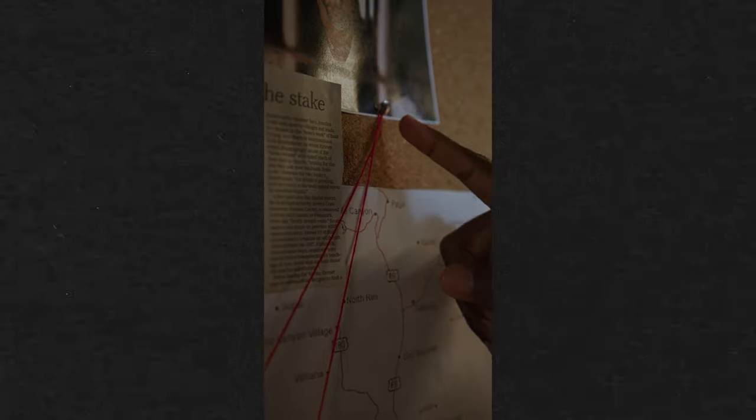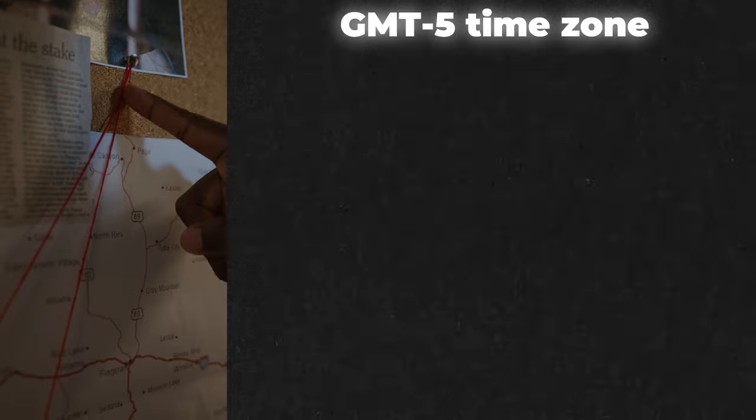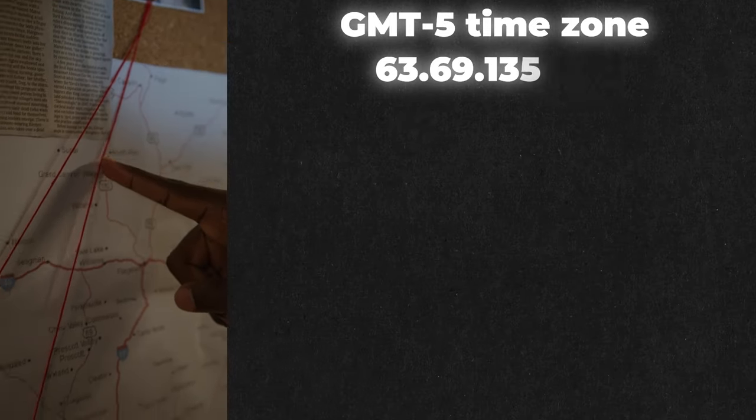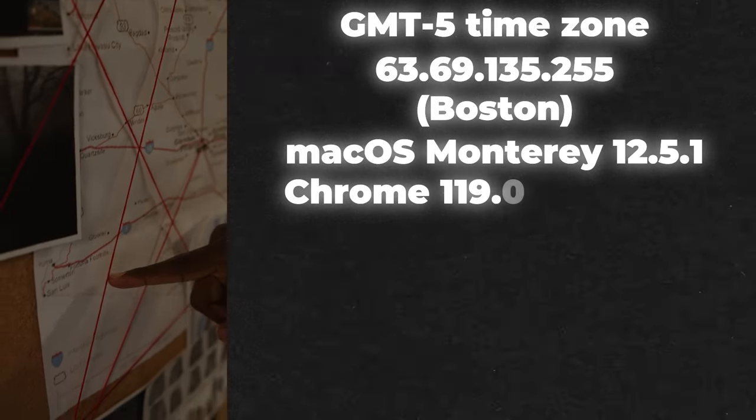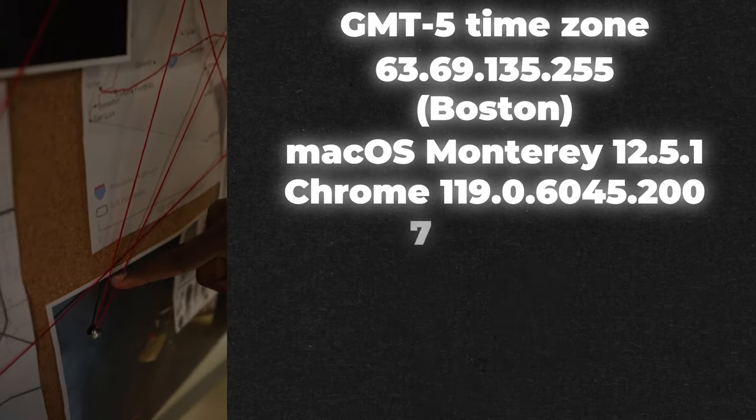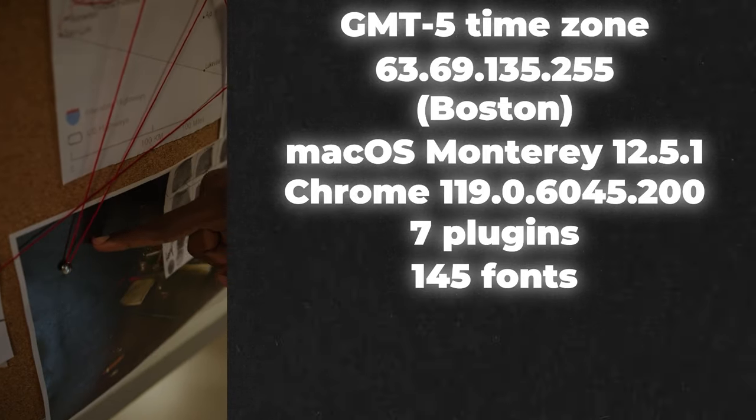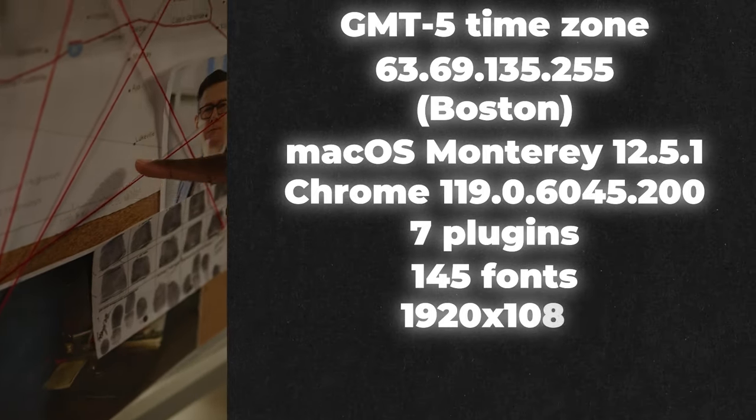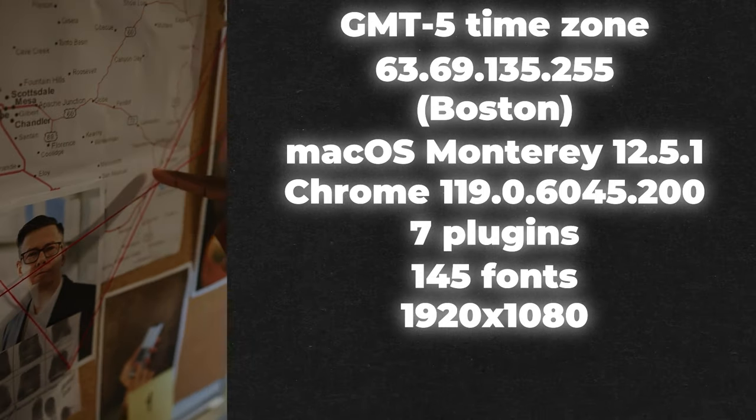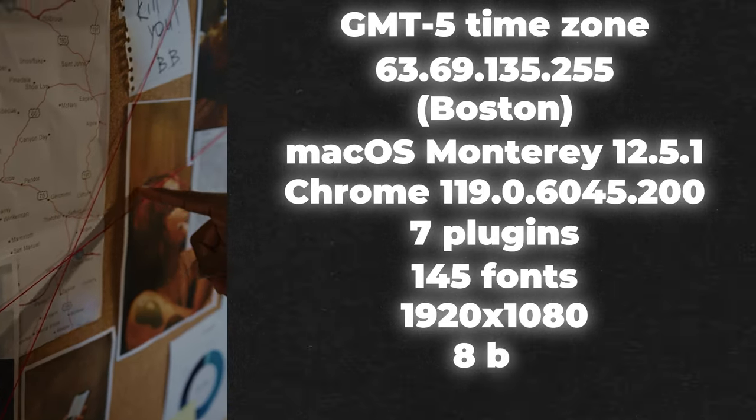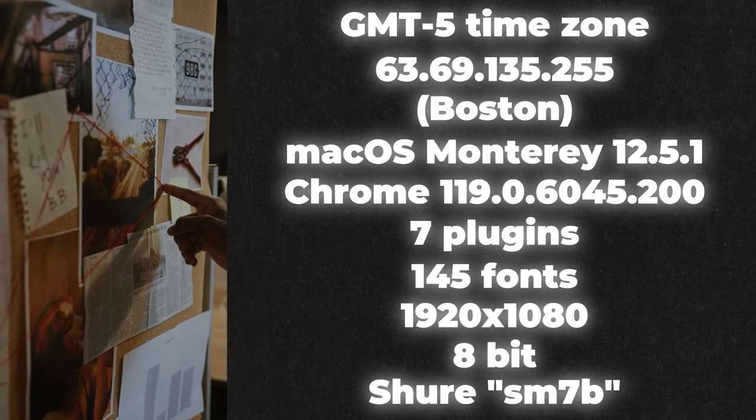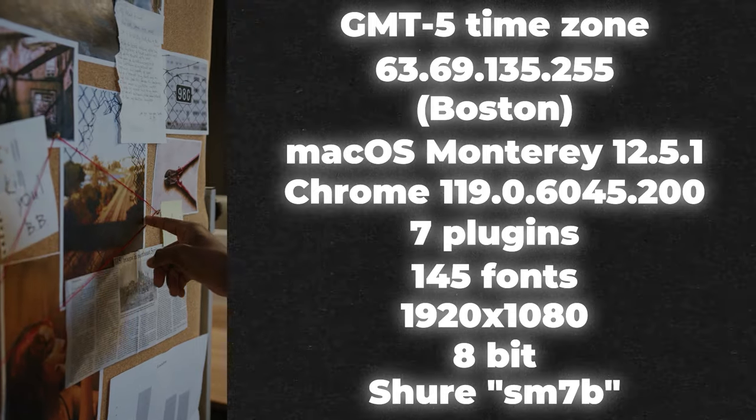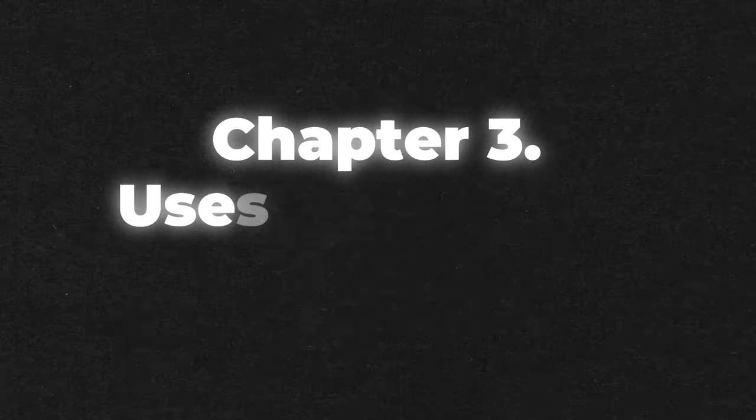When you put all these aspects together, you get a completely unique digital print. For example, you live in the GMT-5 time zone. Your IP address is from Boston, Massachusetts. You have a certain version of macOS installed. Your browser is Google Chrome of a certain version. You use some plugins and we know their names. Your computer has 145 fonts. Your screen resolution is 1920x1080. Your device's color depth is 8 bits. And you have a Shoresome 7B microphone connected to your computer. Believe me, there's no other person with that kind of fingerprint. The website knows for sure that it is you.